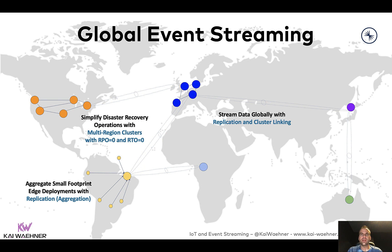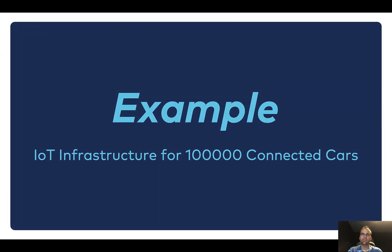In IoT, we see global deployments with different architectures — data replicated between continents and more local deployments for aggregation scenarios. You're very flexible here, with edge and hybrid deployments or multi-cloud. Here's an example: how to build an IoT infrastructure for 100,000 connected cars, similar to the Audi or Lyft examples, so you can see how that looks in the real world.